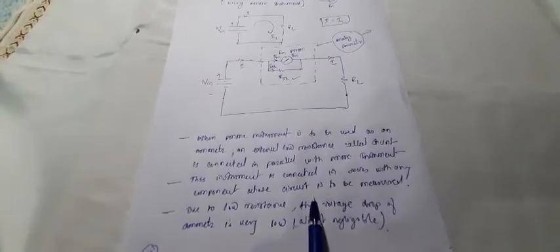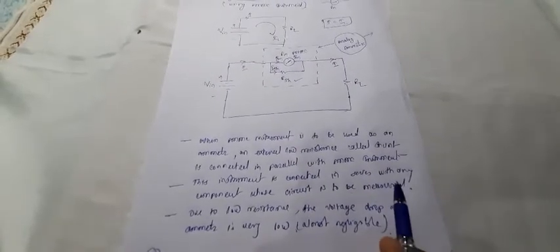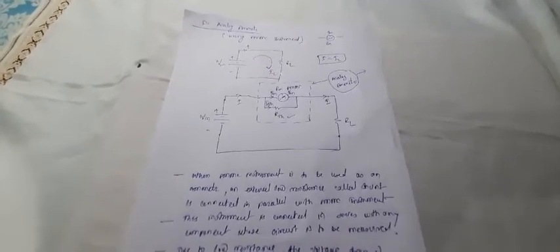This instrument is connected in series with any component — meaning the entire analog ammeter should be connected in series. It is in series with RL. This is the circuit diagram for the analog ammeter.